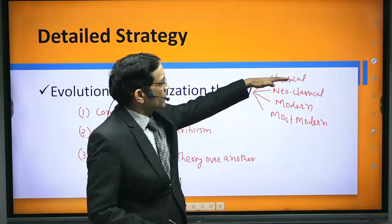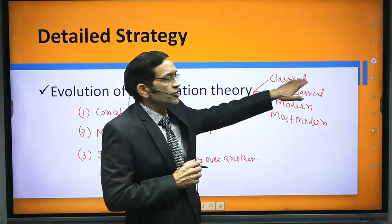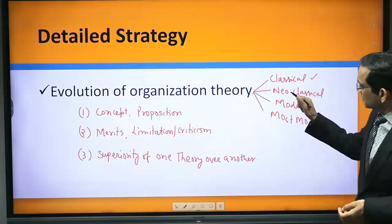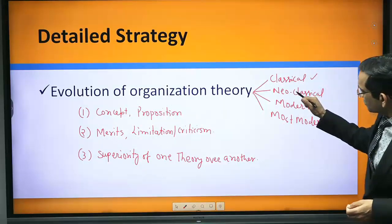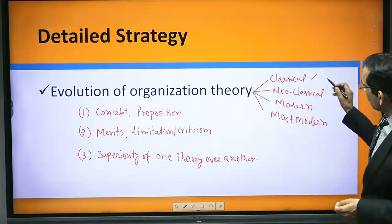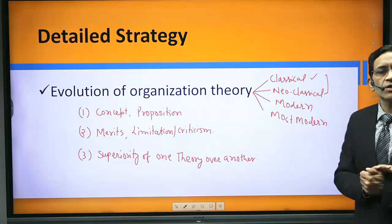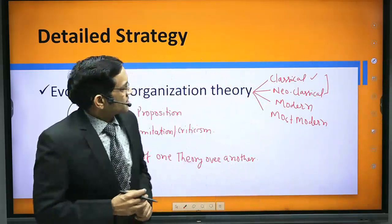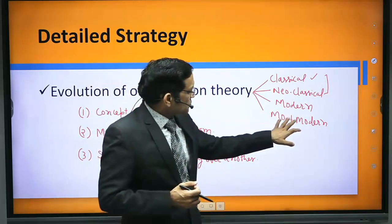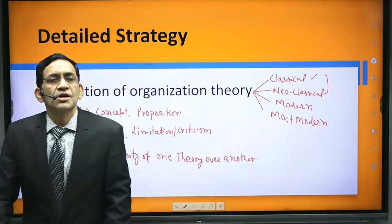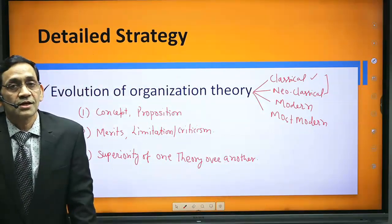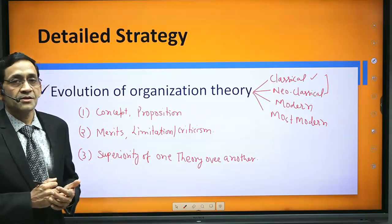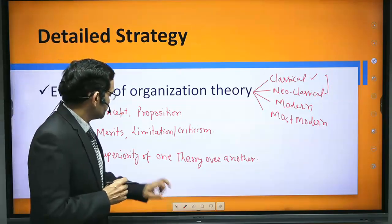These theories were developed in sequence. Neoclassical thought emerged at the end of the nineteenth century to overcome limitations of classical thought — so you must know how neoclassical theory is superior to classical. Modern theories like system theory and contingency theory were developed to overcome limitations of both, so know how system theory is superior to classical and neoclassical. Also prepare important features of most modern theories like virtual organizations and learning organizations, as the paper setter has asked questions on superiority of one theory over another.